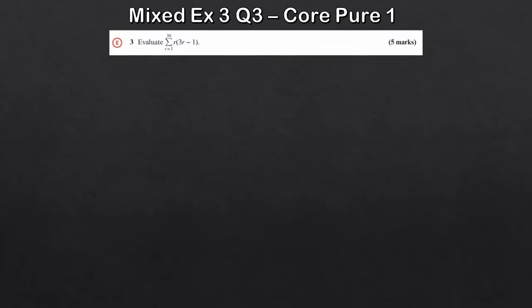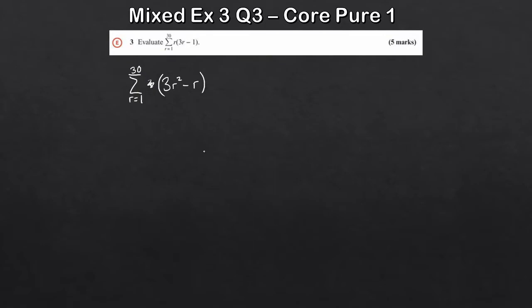We've got to evaluate the sum from 1 to 30 of r times 3r minus 1 — five marks for this, from the mixed exercise 3, question 3. For any of these questions, always expand your brackets first to see what we end up with. So this becomes the sum from 1 to 30 of 3r squared minus r. Now because we've got r squared here, we're going to need the formula for the sum of r squared. So let's write that down.